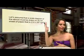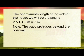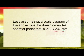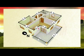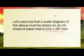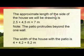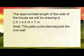The 297 would probably be the length and the 210 would be the breadth. The approximate length of the side of the house we will be drawing is 2.5 plus 4.5 metres, which is 7.5 metres — we get this from our drawing. Note the patio protrudes beyond the wall. The width of the house with the patio is 4 plus 4.2, which gives us 8.2 metres.